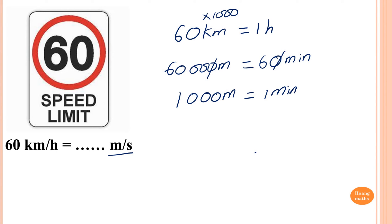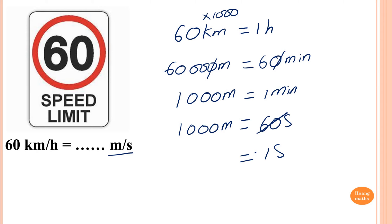But remember, 1 minute is 60 seconds. So I can write 60 seconds. So 60 seconds is 1,000 meters. Then I divide by 60. So it gives me 1 second. So 1,000 divided by 60 equals 16 and 2 thirds meters.